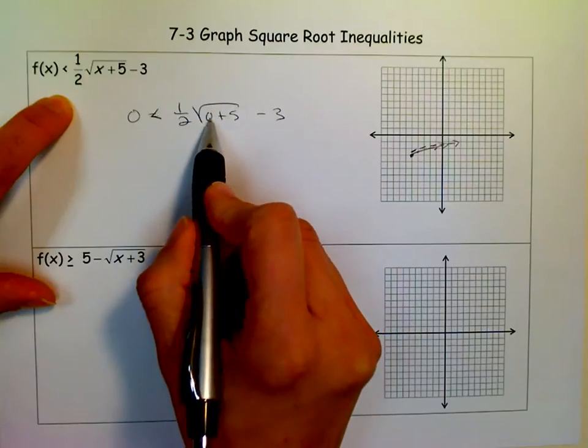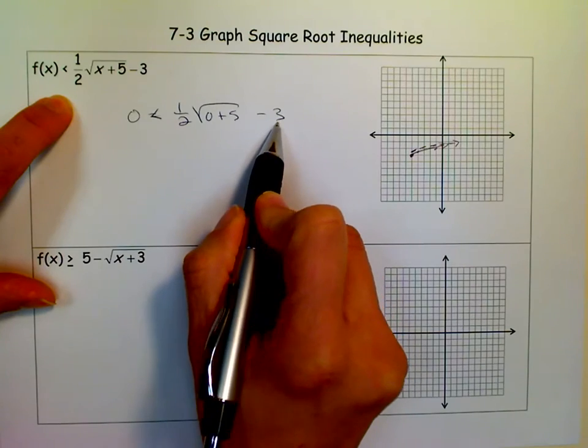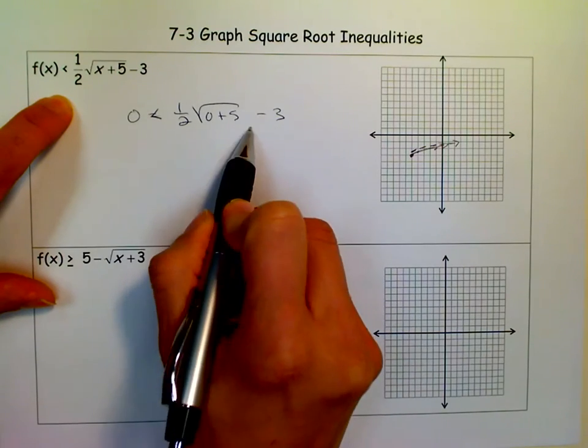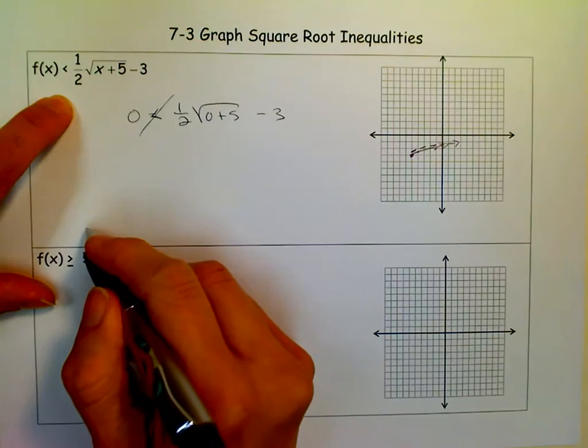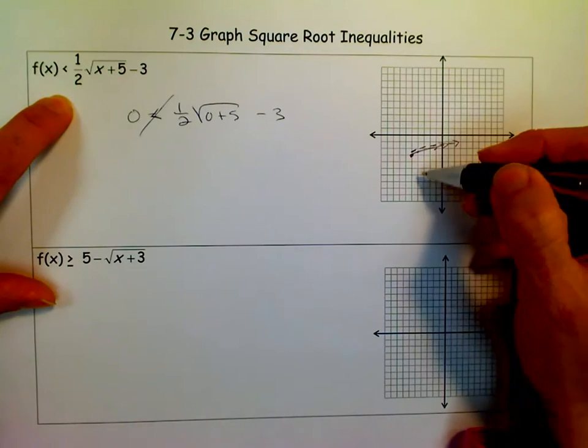And zero is never less than a negative number. So I know that this is not true, which means that I would shade not above the curve, but below it.